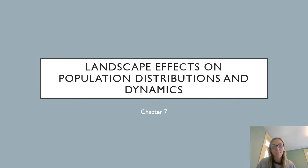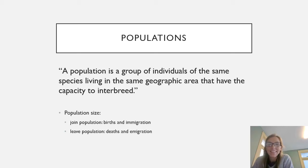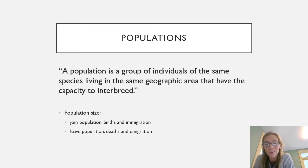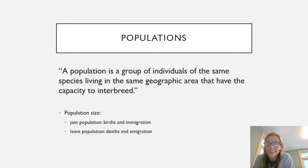We'll talk through Chapter 7 today, focusing on landscape effects and population distribution and dynamics. A population is a group of individuals of the same species living in the same geographic area — in landscape ecology terms, we would say they live within the same patch. All populations tend to undergo some fluctuations or even a life cycle of growth, leveling off, and then often extinction.